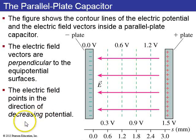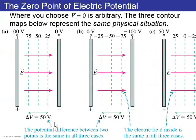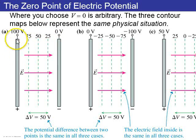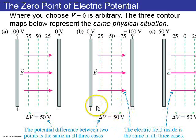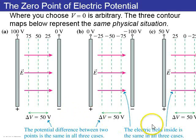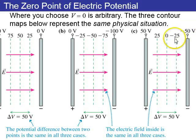Where you choose the electric potential to be zero is arbitrary. Normally the convention is to set the negative plate at 0 volts, making the positive plate at 100 volts, with equipotentials in between. Alternatively, if the negative plate is at negative 100 volts, the positive plate is at 0 volts — the difference is still 100 volts. Delta V of 50 volts is the difference between two equipotential surfaces halfway across the plates, or 100 volts between the plates themselves.